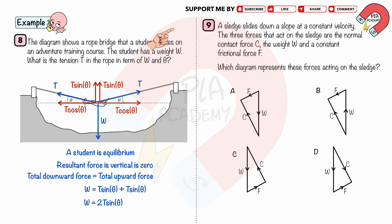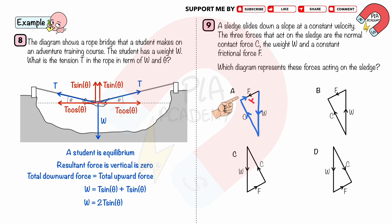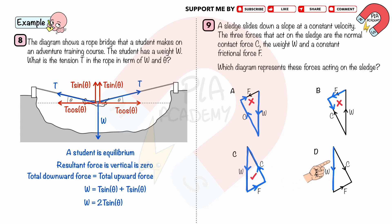Work Example 9: A sledge slides down a slope at constant velocity. The three forces acting are the normal contact force C, the weight W, and a constant frictional force F. Since the sledge moves at constant velocity, it is in equilibrium, so the vector diagram of W, C, and F must be a closed triangle with arrows going the same way round. Choices A, B, and D are incorrect because the arrows do not point in the same direction around the triangle. Choice C is correct.